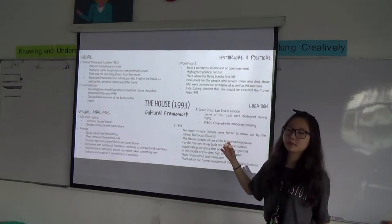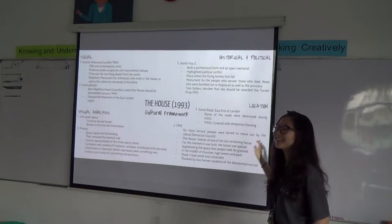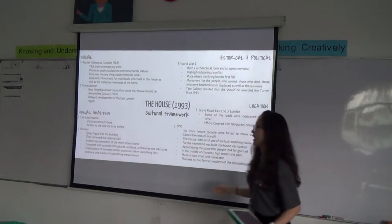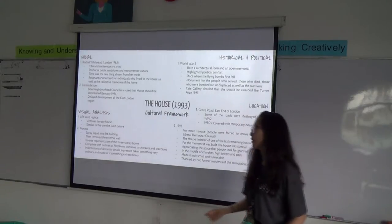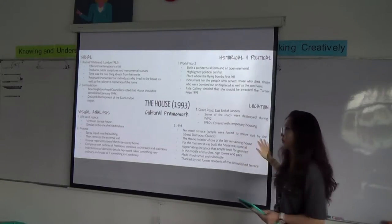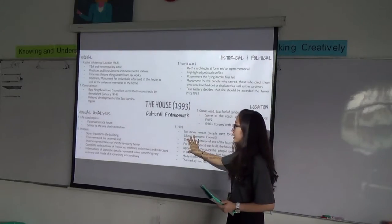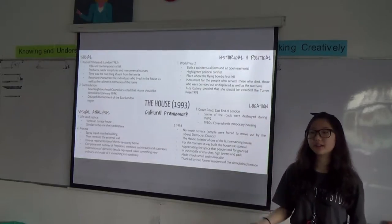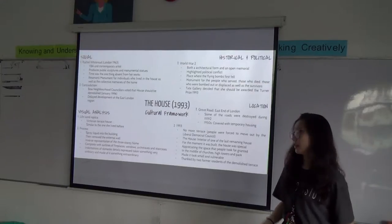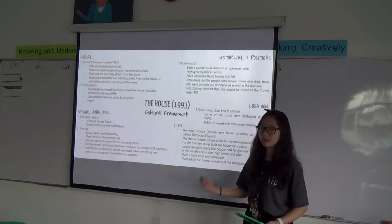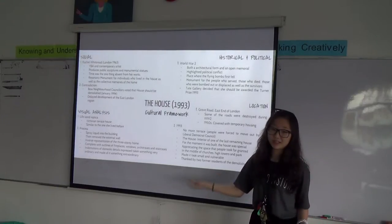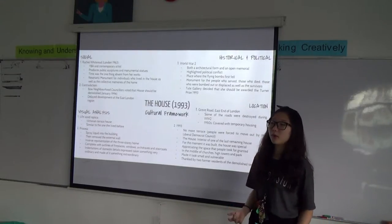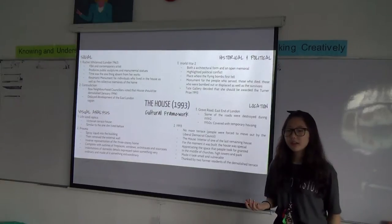Moving on to the visual analysis — the house is a life-size replica of a Victorian terrace house, including the location and everything in the interior. I think she chose a Victorian terrace house because she has a personal connection to them; she used to live in one. The Ghost was similar to the one she lived in, and probably because it's the same Victorian terrace house, it was more personal and comfortable for her.